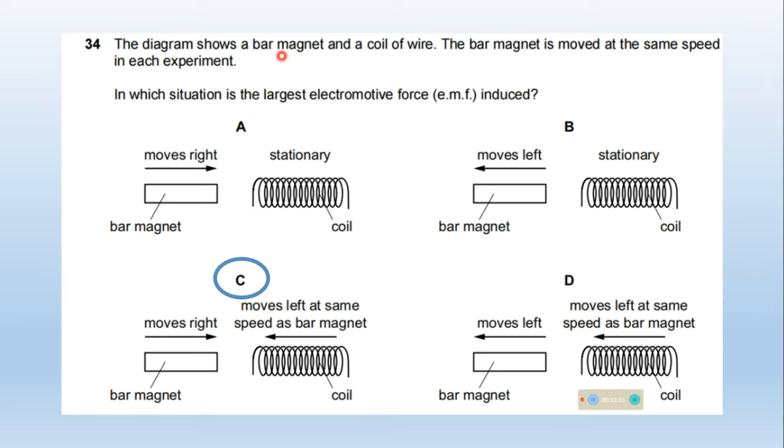The diagram shows a bar magnet and a coil of wire. The bar magnet is moved at the same speed in each experiment. In which situation is the largest EMF induced? In cases A and B, the coil is stationary but the bar magnet is moving. In case A it's moving toward the coil, in case B away. In both cases there will be induced current and EMF with opposite directions.